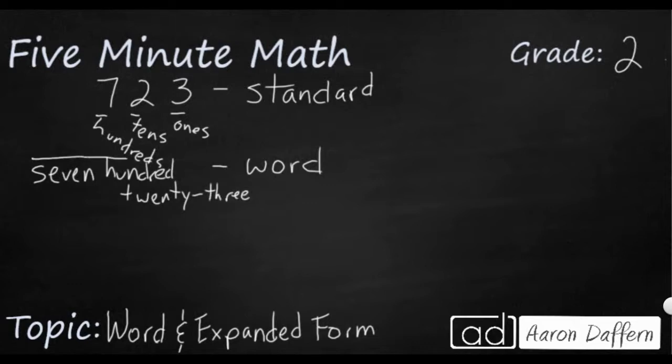And then finally, we have expanded form. So expanded form takes a look at the value of each digit in its place value. So starting with the largest one, the seven in the hundreds place means I have 700. Now you add it together because when we're looking at expanded form, we add together the sums of each digit and the value that it has in its place value. I've got two tens, so two tens is going to be 10, 20, and then three ones. That's simply going to be three. So that's expanded form.